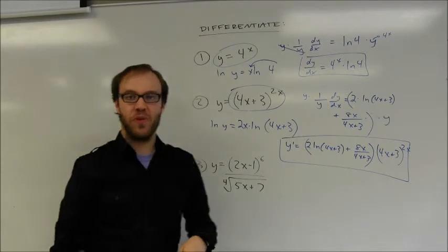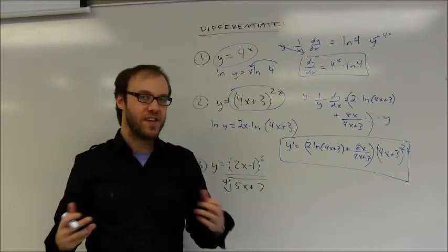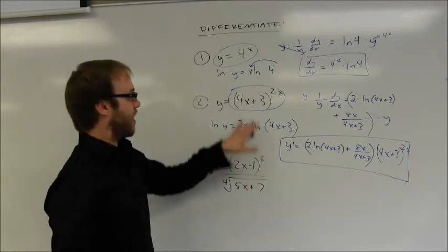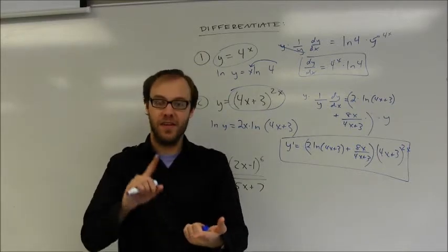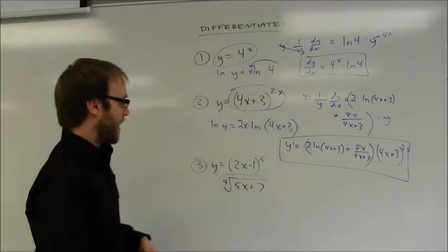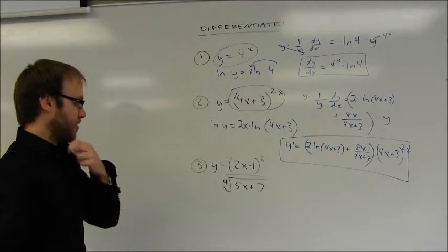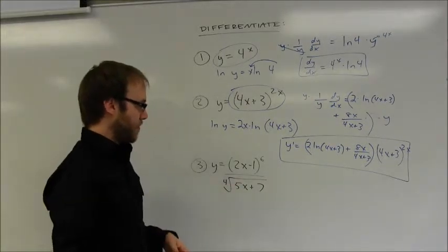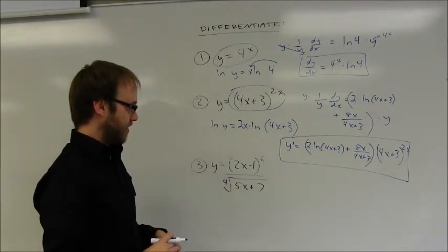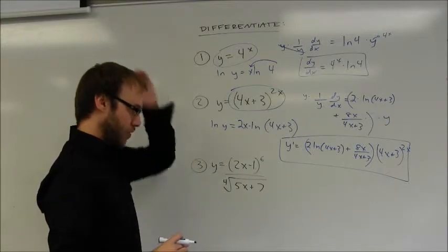So not exactly a real pretty solution there, but the process really isn't all that bad. It's the same process as what you're doing up here. You're just having to apply the product rule and the chain rule. And my third example here, this is a problem where you could take a derivative using the quotient rule.